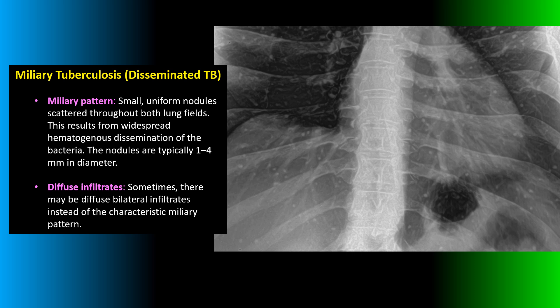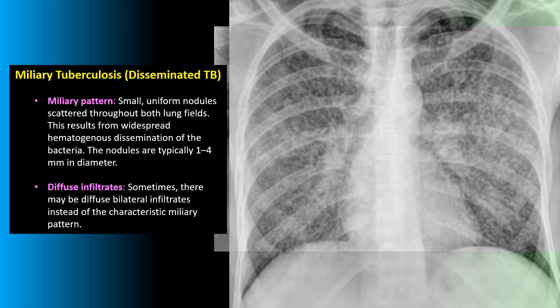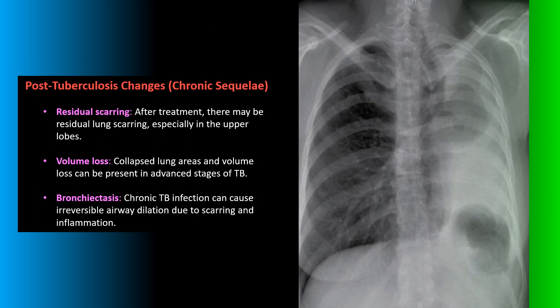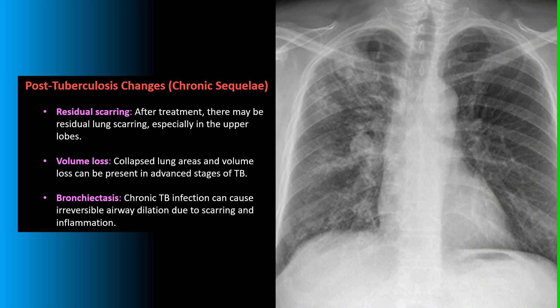Miliary tuberculosis, or disseminated tuberculosis, presents with tiny, small, uniform nodules scattered throughout the lung fields — these can be very subtle and are easier to spot on CT. Post-tuberculosis or chronic sequelae includes residual scarring, significant volume loss, and conditions such as bronchiectasis from chronic TB infection.